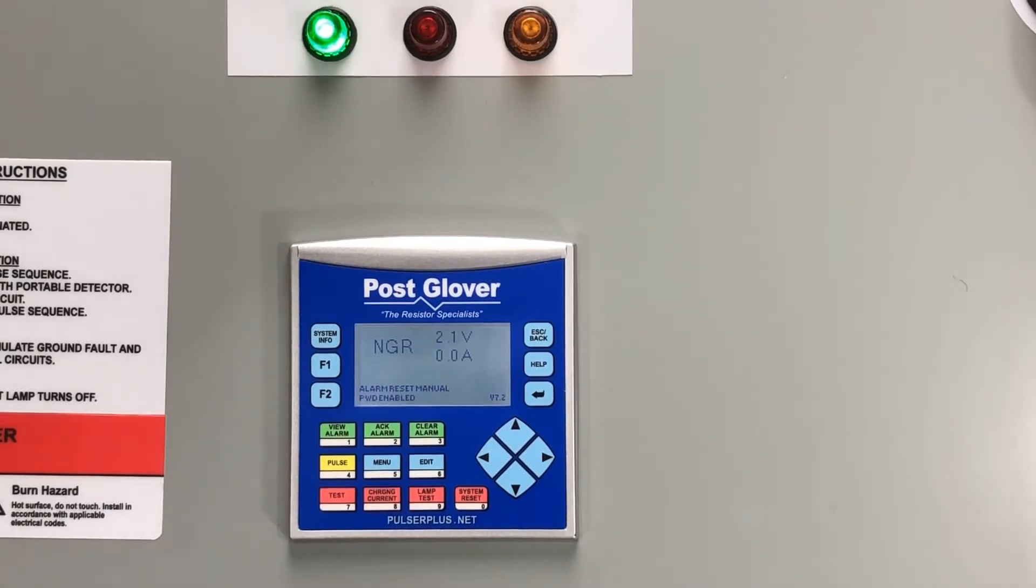If you look at the keypad on the PLC, you'll notice that the number 9 on the pad also says lamp test. If you press the lamp test or number 9 button, a prompt will appear telling you to navigate to setup to use lamp test.